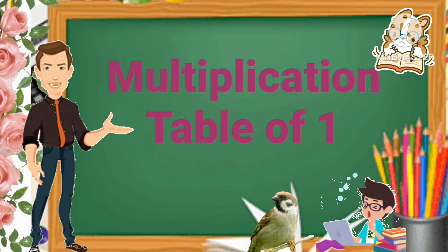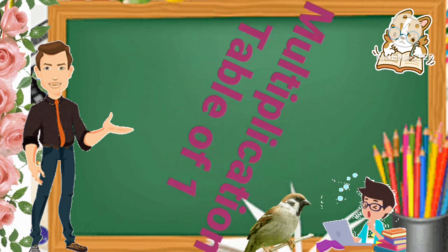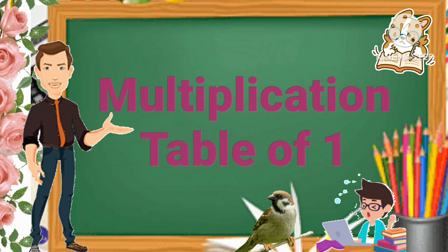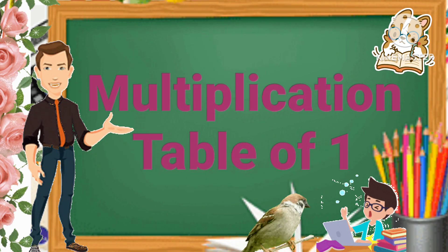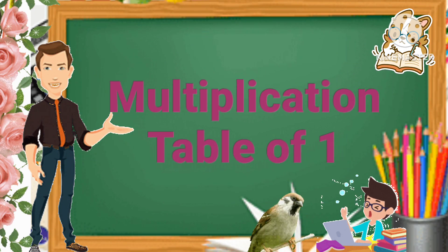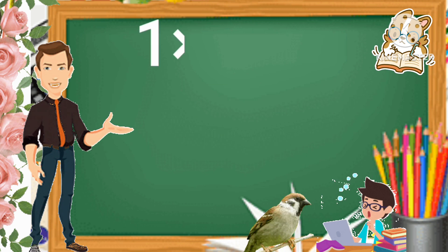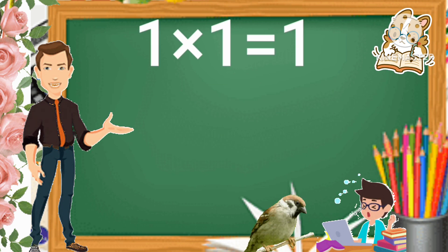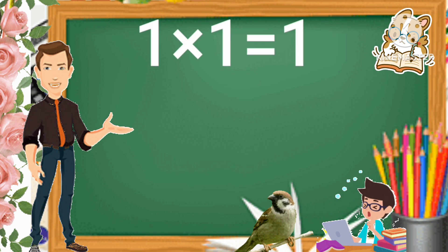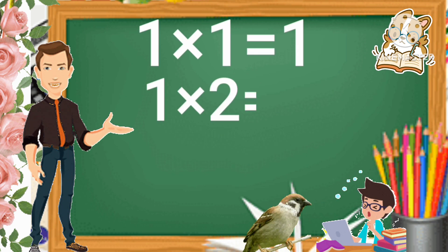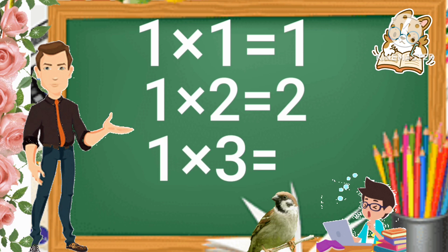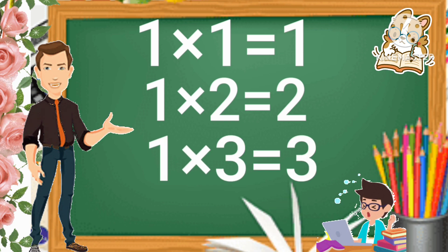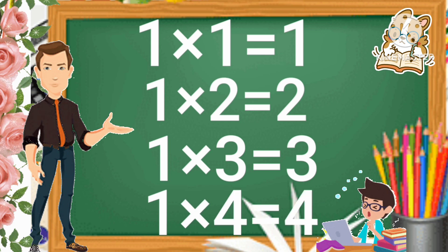Multiplication Table of 1. Let's start. 1 times 1 is 1. 1 times 2 is 2. 1 times 3 is 3. 1 times 4 is 4.